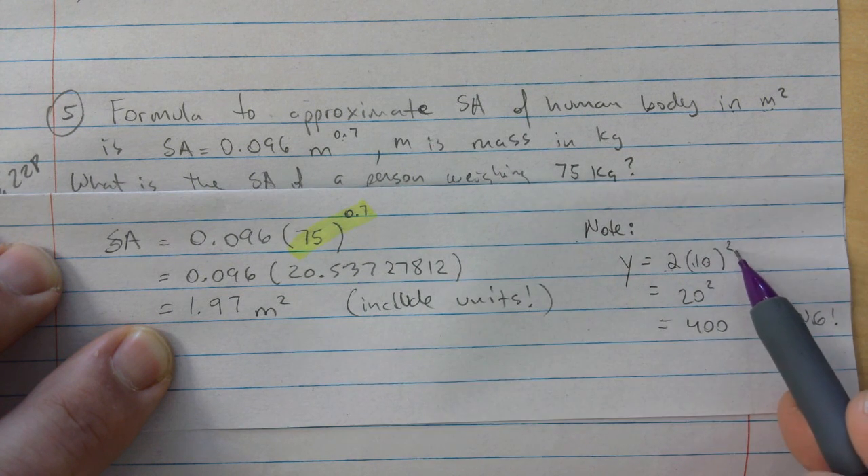And then note, this is the common mistake that I see when I give students something like this. Let's say they go 2 times 10 squared. They will say, oh, 2 times 10 is 20, 20 squared, that's 400. This is wrong. You cannot multiply - like, this has an exponent attached to it, you've got to do that first. The correct way is y is equal to 2 times 100, because 10 squared is 100, and that's 200. This is correct. This is wrong.